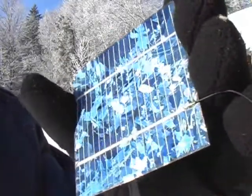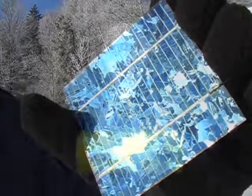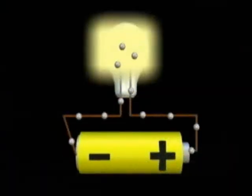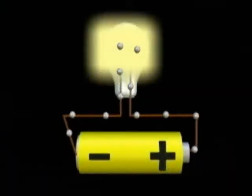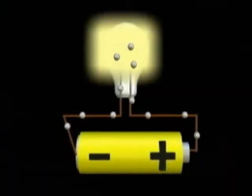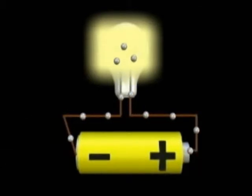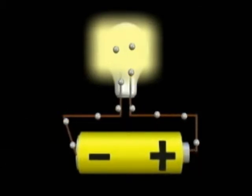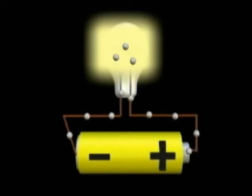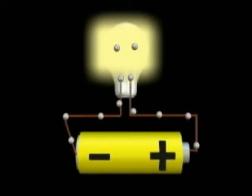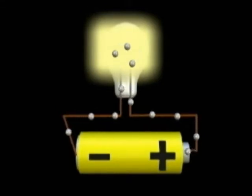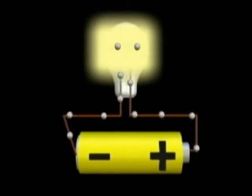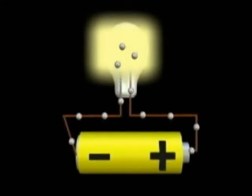If you have watched our video on electricity, you will know that electricity is a flow of electrons — charged atomic particles — that travel through a conductor from the negative terminal to the positive terminal of a battery. The battery is a chemical device that produces the force needed to move the electrons. In this animation, electrons are flowing through a light bulb, and electrical energy is being converted to light energy.